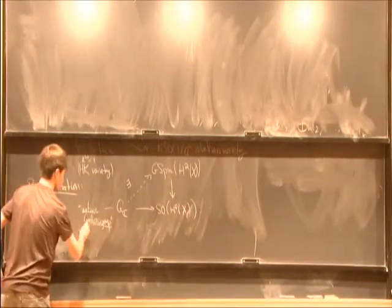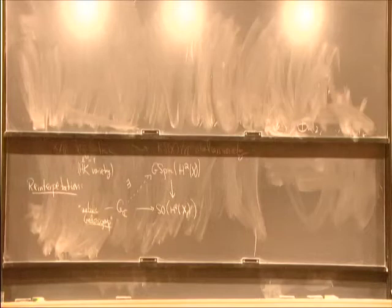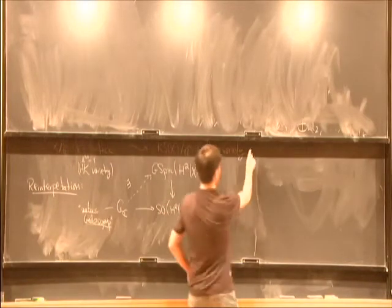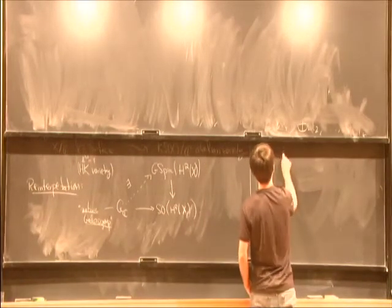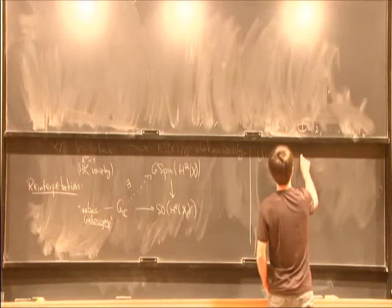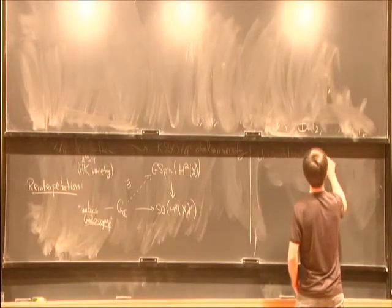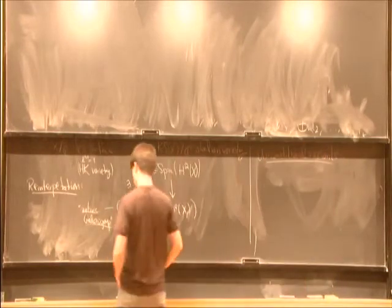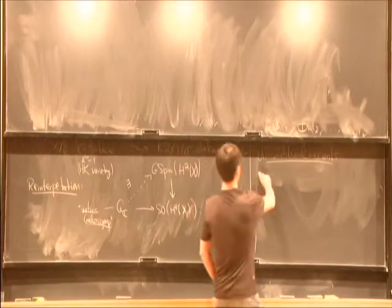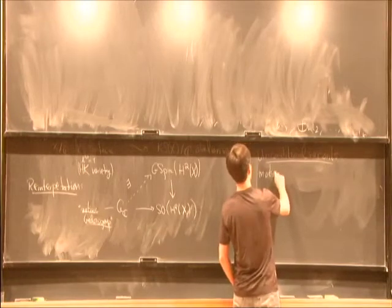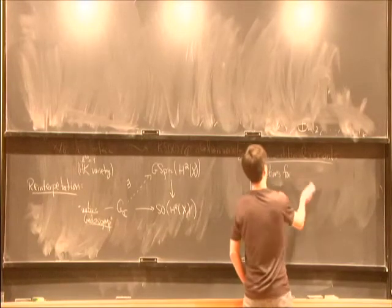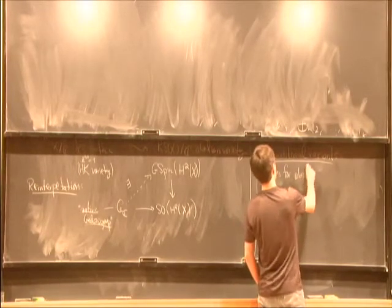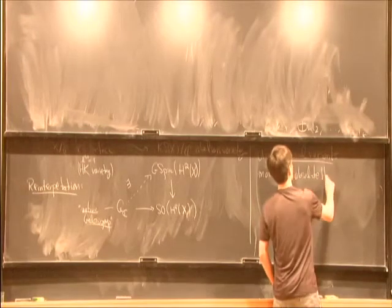This group doesn't exist because one doesn't know the standard conjectures. But there are unconditional variants in which you can make sense of this motivic group. The first such is the theory of motives for absolute Hodge cycles. This is due to Deligne.